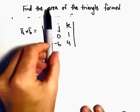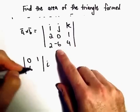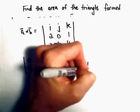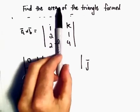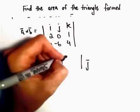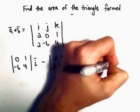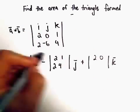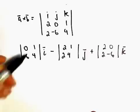Alright, so if you imagine covering up the I column, we'll be left with 0, 1, negative 6, and 4. We'll subtract away the J component. So J, if we cover up that column, we're left with 2, 1, 2, 4. And then we'll add to that our K component. So then we'll be left with 2, 0, 2, negative 6.